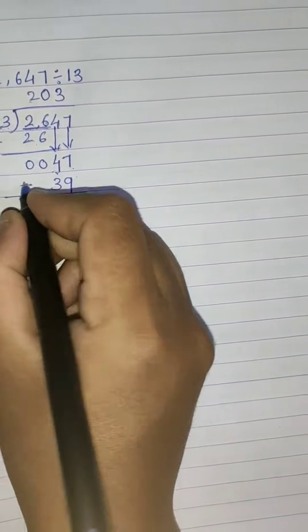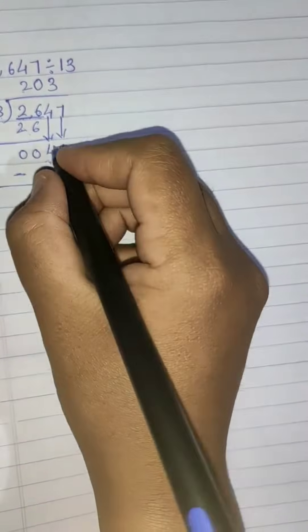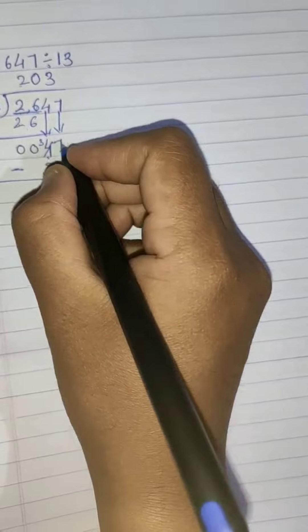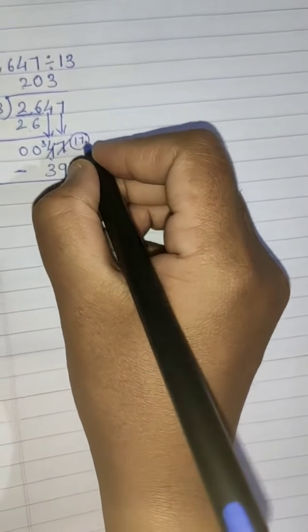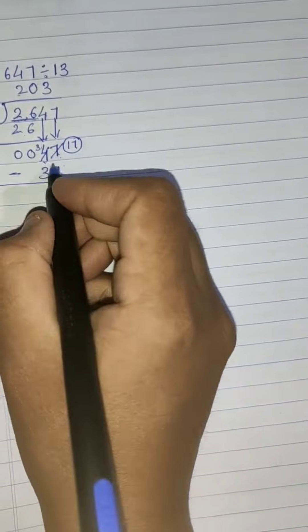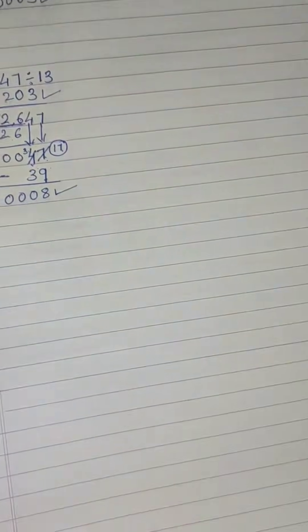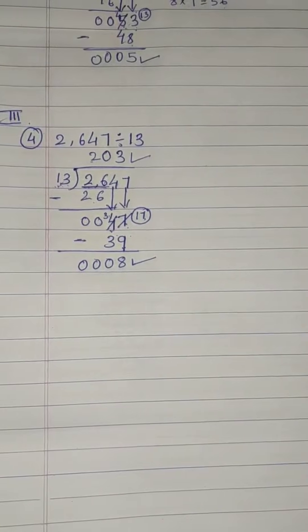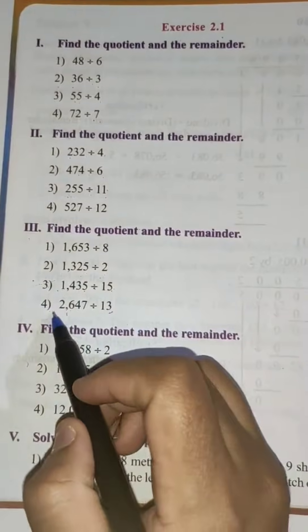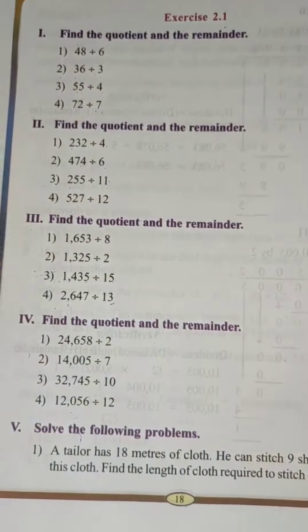Subtract 47 minus 39: 7 minus 9 — borrow 1 from the next place, so this becomes 3 and 17. 17 minus 9 is 8, and 3 minus 3 is 0. So the quotient is 203 and the remainder is 8. We have now solved the fourth example. Try to solve the third one — 1,435 divided by 15 — by yourself.